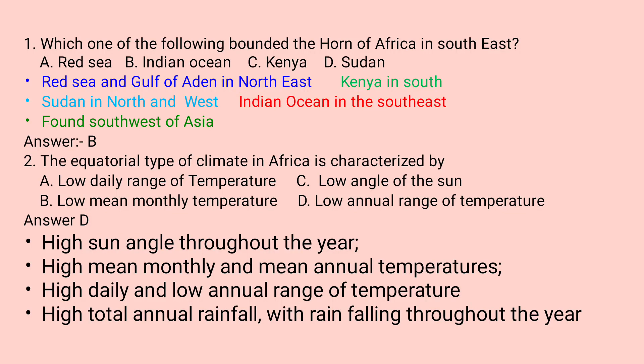Question one: Which one of the following bounded the Horn of Africa in South-East? A. Red Sea. B. Indian Ocean. C. Kenya. D. Sudan.